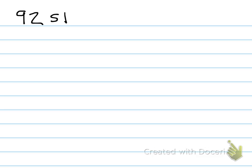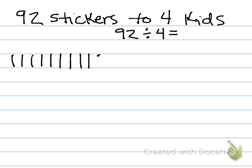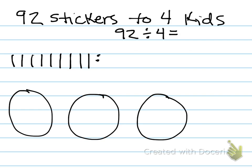Let's try another one. Let's say we have 92 stickers to give out to four kids. We want to know how many stickers each kid is going to get. So the problem we're going to model is 92 divided by 4. Let's use our base 10 pictures to model 92: nine lines and two dots. There are four kids — that's our divisor — so we've got to make four circles.